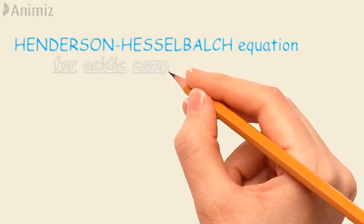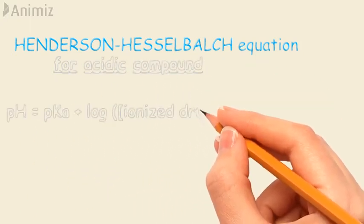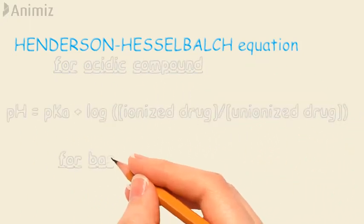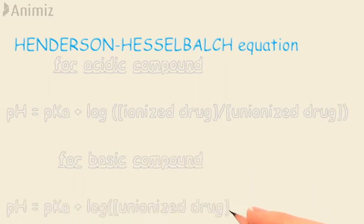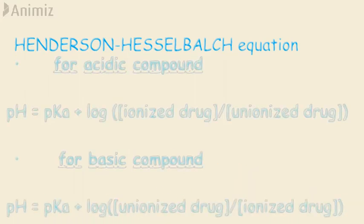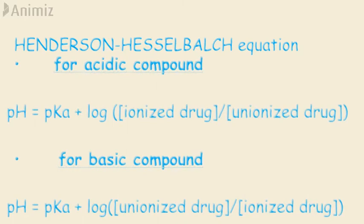Let's check the Henderson-Hasselbalch equation, which helps to estimate ionized and unionized drug concentration at a particular pH. For acidic compounds: pH = pKa + log([ionized drug] / [unionized drug]). For basic compounds: pH = pKa + log([unionized drug] / [ionized drug]).